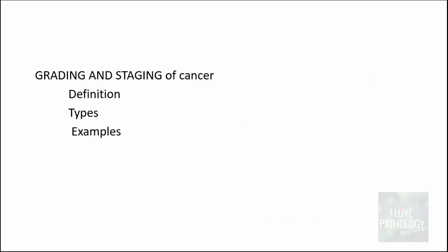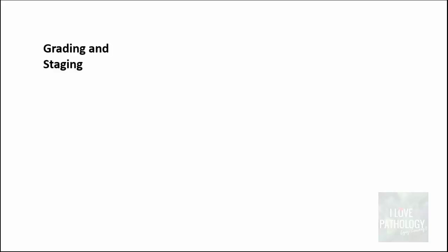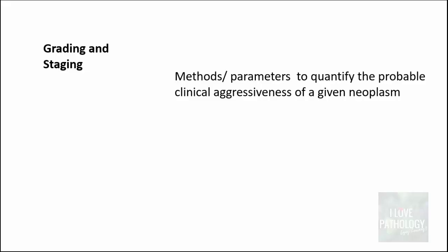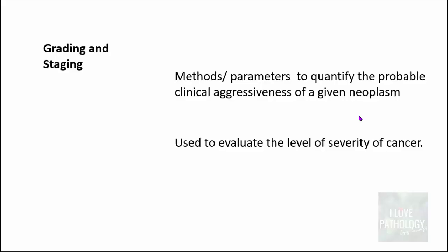In the next 10 to 15 minutes we will see what grading and staging means. We will look into various types of grading and understand this by some examples. Grading and staging are basically the methods or parameters which are used to quantify the probable clinical aggressiveness of a given neoplasm — that is, whether the given neoplasm behaves aggressively or not.